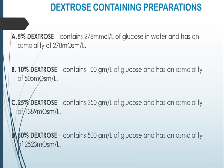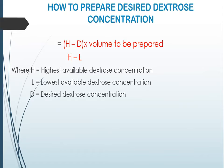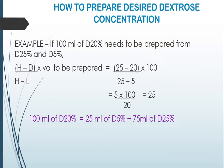These are the commonly available preparations. If we need any other dextrose concentration other than these formulations, we have to prepare it by mixing two dextrose concentrations. The formula to prepare a desired dextrose concentration is: (H - D) divided by (H - L), multiplied by the volume to be prepared, where H is the highest available dextrose concentration, L is the lowest available dextrose concentration, and D is the desired dextrose concentration. For example, if 100 ml of dextrose 20% needs to be prepared from dextrose 25% and dextrose 5%, the formula is (H - D) / (H - L) × volume.